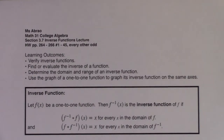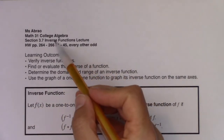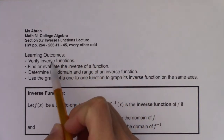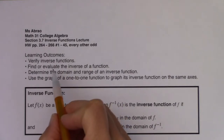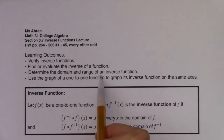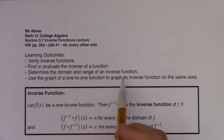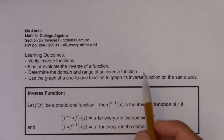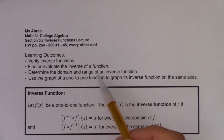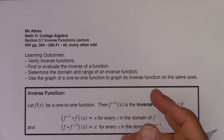Welcome to the last section in chapter 3. We're going to do section 3.7 and take a look at inverse functions. By the end of this section we want to be able to verify if functions are inverses of one another, find or evaluate the inverse of a function, determine the domain and range of an inverse function, and use the graph of a one-to-one function to graph its inverse on the same axes. We're going to look at inverse functions analytically, numerically, and graphically.